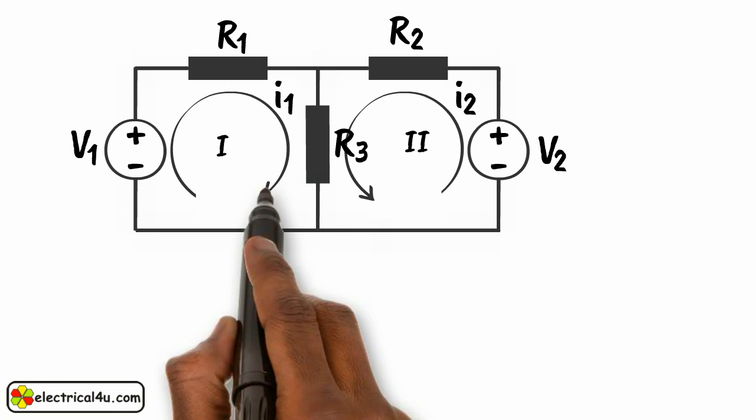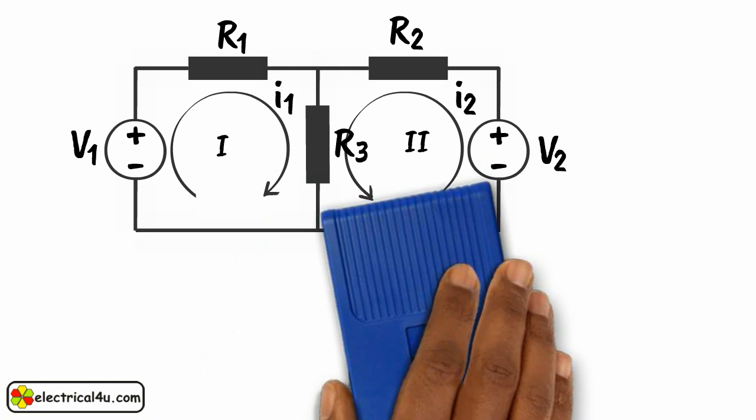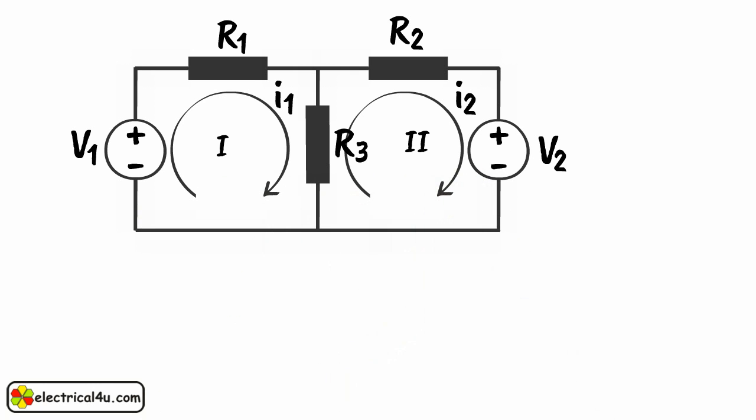It is not needed to take all the mesh currents in same direction. We can consider any of the mesh currents in any direction. After solving the KVL equations for each mesh, we will get actual branch current in actual direction. Here, in this circuit we have considered both mesh currents in same clockwise direction.